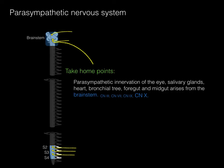That's the vagus nerve — and it's a big one. The vagus nerve innervates the heart, lungs, the bronchial tree, foregut, midgut, and associated organs like the liver and pancreas.